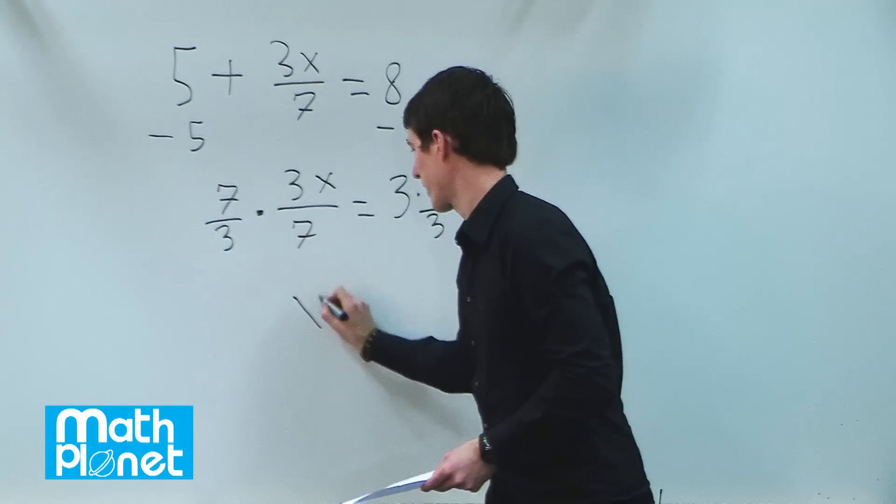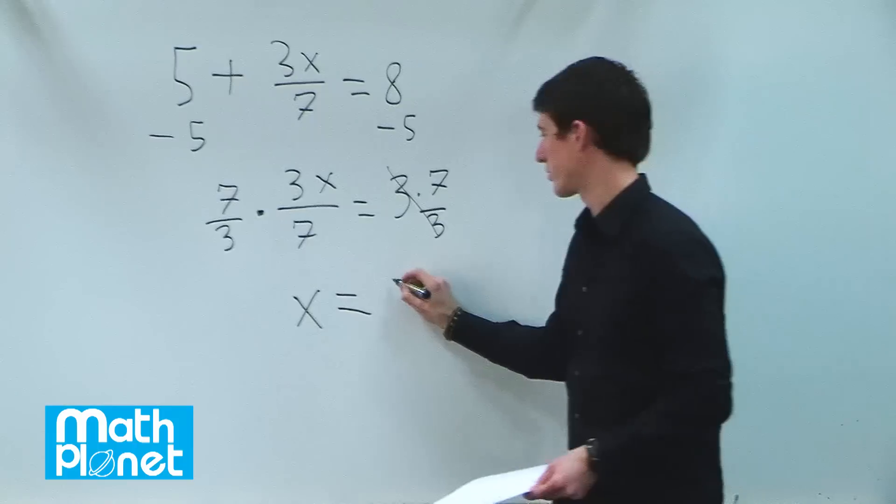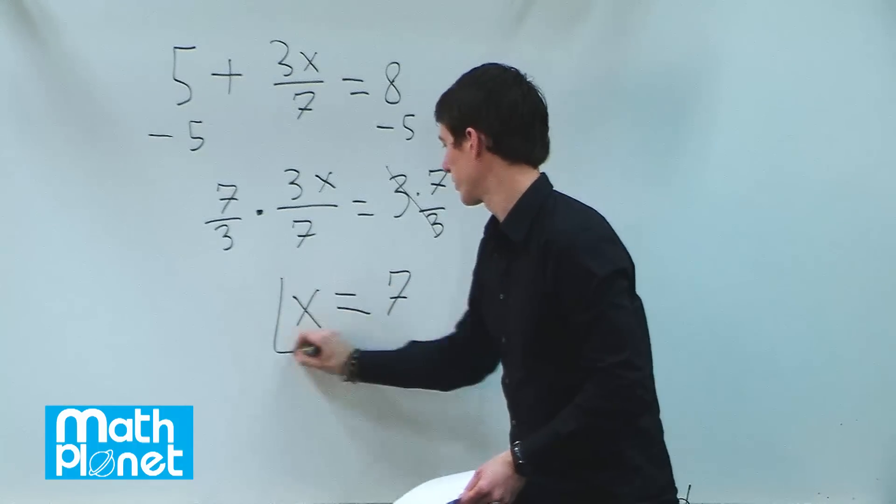These cancel and of course just give us x, and then we see what we have here. The 3's cancel, which is nice, and we're left with just x equals 7.